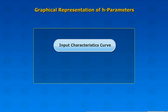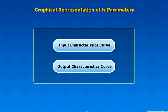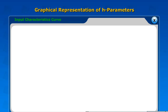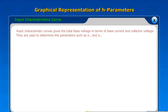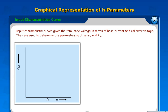Input characteristic curve and output characteristic curve. Input characteristic curves give the total base voltage in terms of base current and collector voltage.